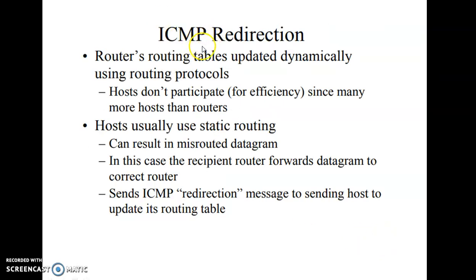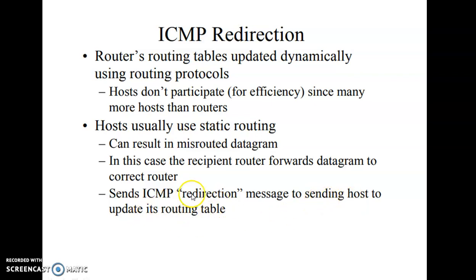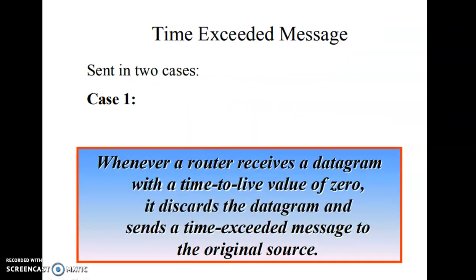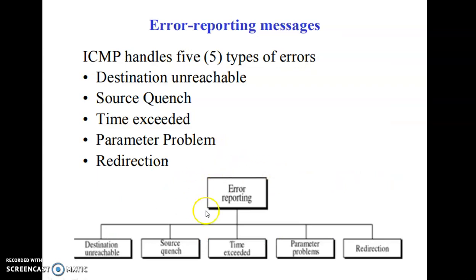Finally, there is the ICMP redirection message. This message is sent by the router to the source when there is a direction problem — basically misrouting of a packet within the network. Misrouting occurs when all hosts do not participate in the routing table, as hosts use static routing, which can result in misrouted datagrams. The router forwards the packet to the correct router and sends the redirection message to the source host to update its routing table. With this, all five error reporting messages have been discussed.